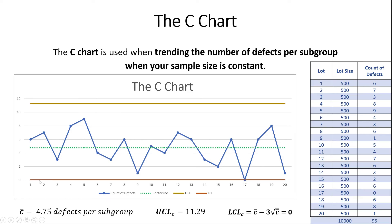Graphically, you'll see the lower control limit here is at zero and the upper control limit is 11.29. Our team simply plots the count of defects — that's the C chart. You can see the center line in green, which is the average of our process at about 4.75 defects per subgroup.